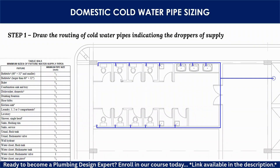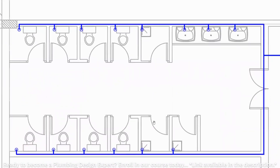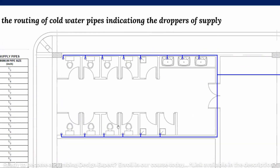Domestic cold water pipe sizing: the very first step is to draw the route of cold water pipes, indicating the droppers of the supply. In this case we have lavatories, showers, and WCs. For the WC, water is not supplied for flushing — instead, each WC will have one hand spray or hose bib, and water is supplied for that purpose.